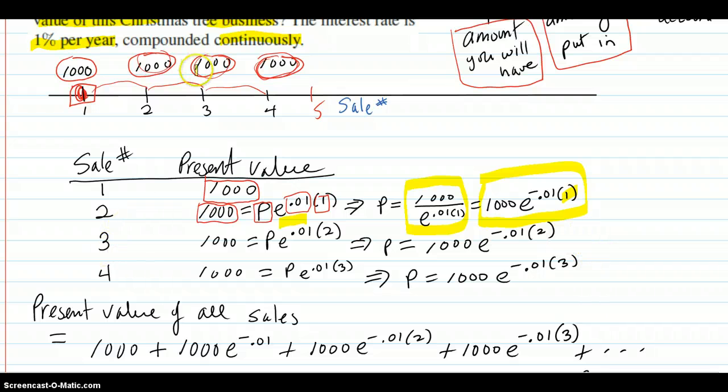So here, sale number three. What do you have to put in right now that would be the equivalent of having $1,000 in sale three? So here's your $1,000 you hope to have. What do you have to put in now? And it'll be in there for two years in order to end up being $1,000.